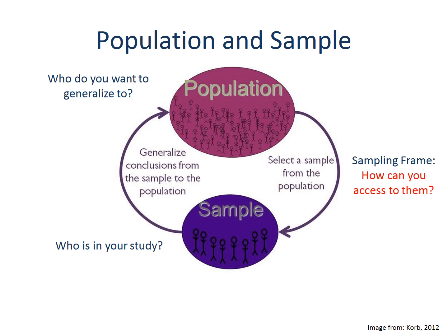So why do we need sampling? In an ideal world, we would collect information from all people that we are interested in. For example, if we want to understand ASU students, the population of our study will be all ASU students. Or if you want to know undergraduate students in the United States, your population will be all undergraduate students in the country. Would it be possible to collect information on all of them? How much time and resources would we need to do so?